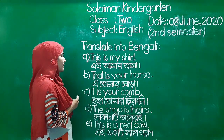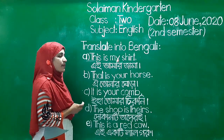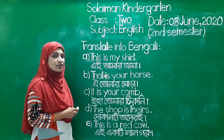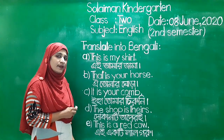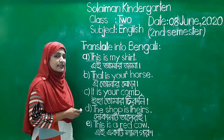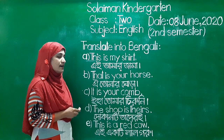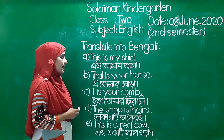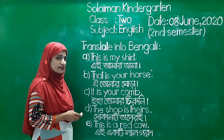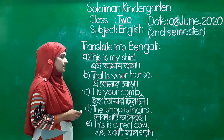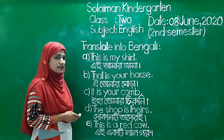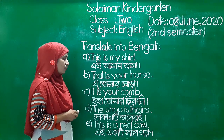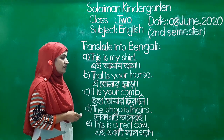E number: This is my shirt. Artho, ai amar jama. B number: That is your horse. Artho, oi tomar bhora.